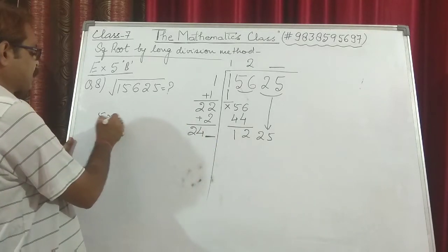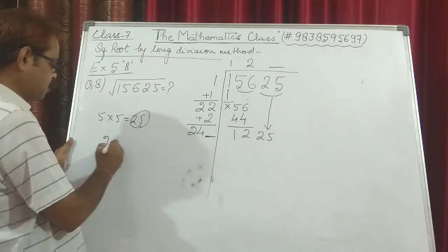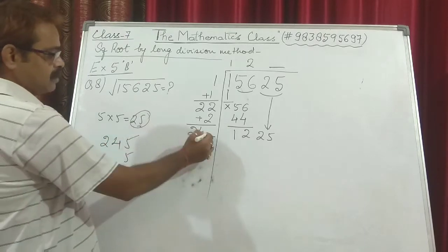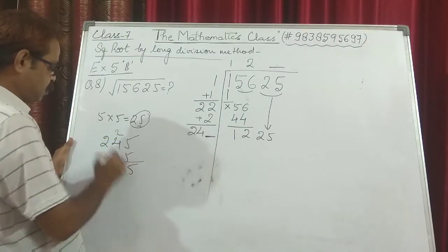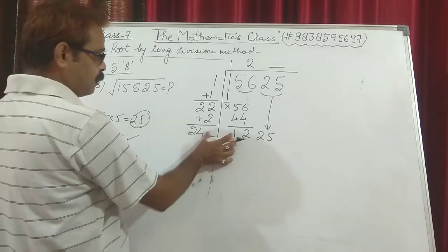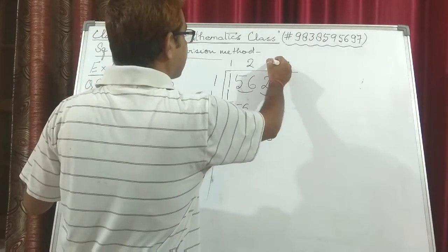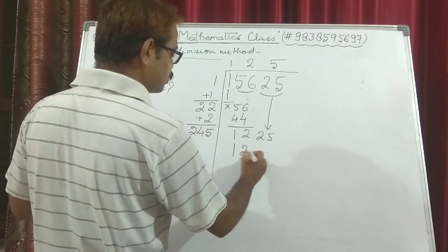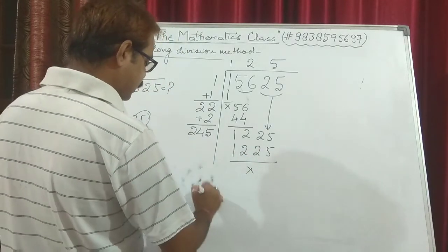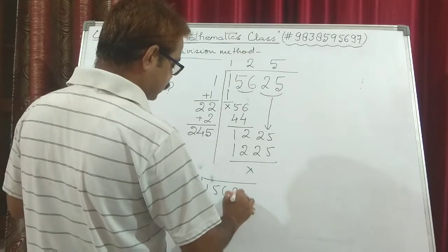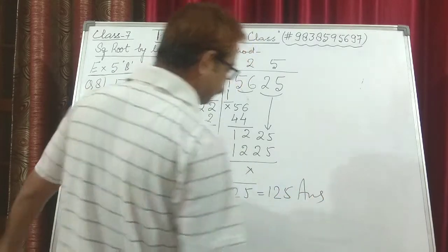We know 5 into 5 is 25, so our first hope is with 5. Writing 245 into 5 in both places: 5 times 5 is 25, carry 2; 5 times 4 is 20 plus 2 is 22, carry 2; 5 times 2 is 10 plus 2 is 12. So 245 times 5 gives 1225. Nothing is left as remainder. So under root 15625 is equal to 125. That is the final answer.